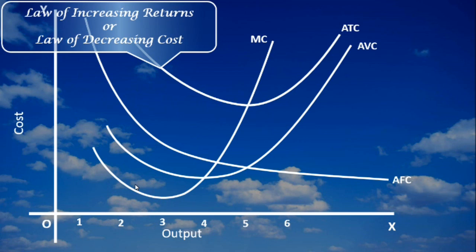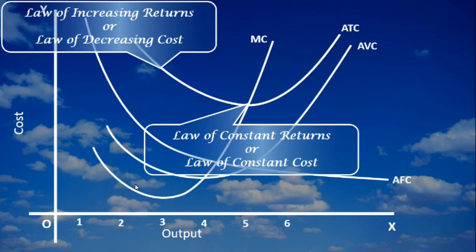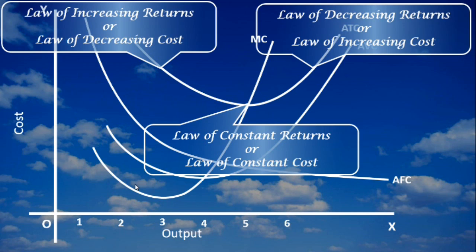At the minimum point of Average Total Cost curve, Law of Constant Returns or Law of Constant Cost operates. After that, Law of Diminishing Returns or Law of Increasing Cost drives the curve upwards. Hence, the average total cost curve, otherwise known as average cost curve, is U-shaped.